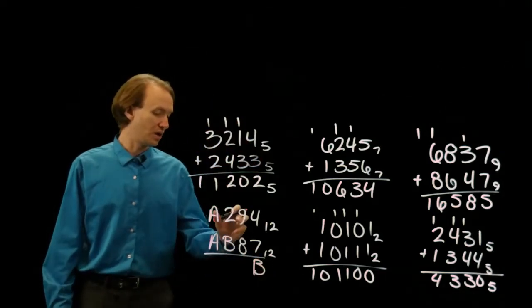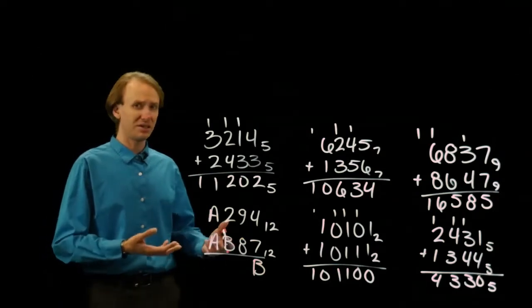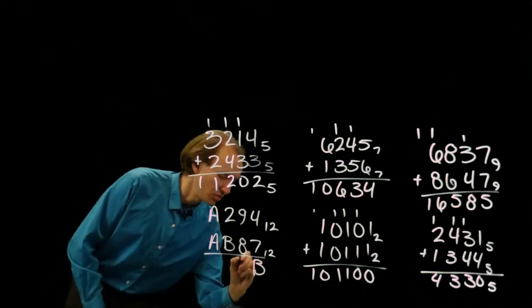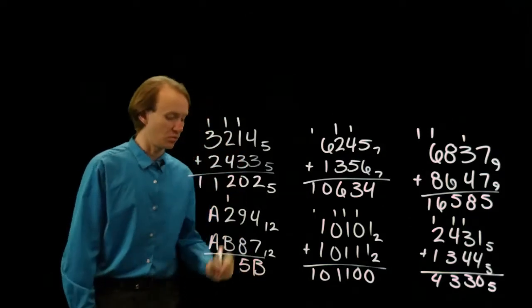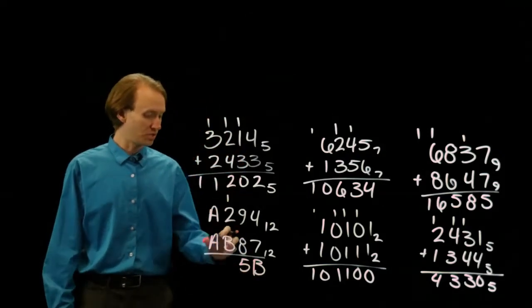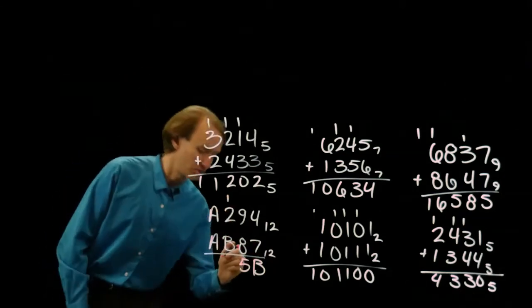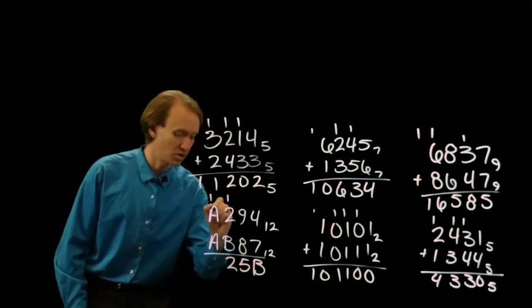Now, 9 plus 8 is 17, but I'm working in base 12, so I have a 12 plus a 5. So, I'll write down the 5 and carry the 1. 1 plus B gives me 12, so that's 10, leaving me with 2, and I'll carry a 1.